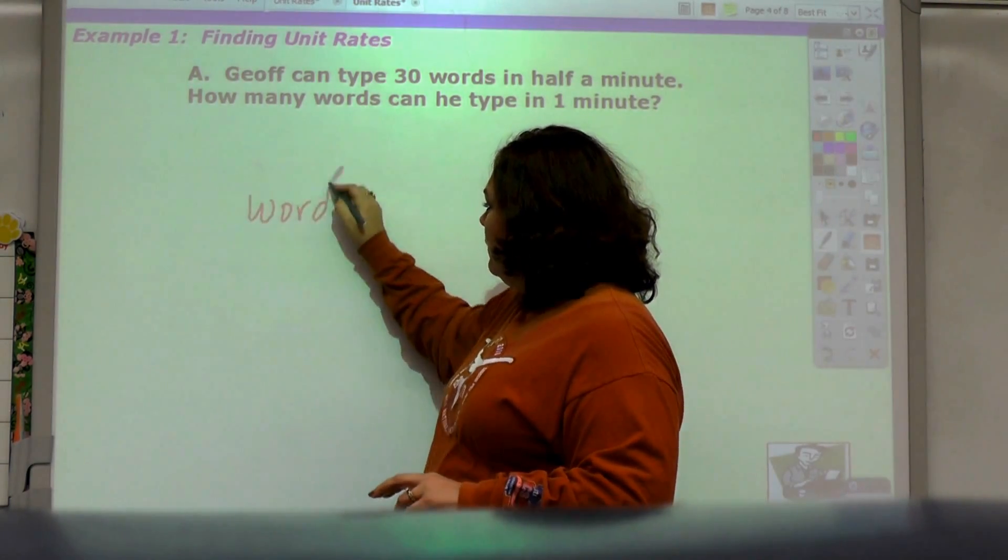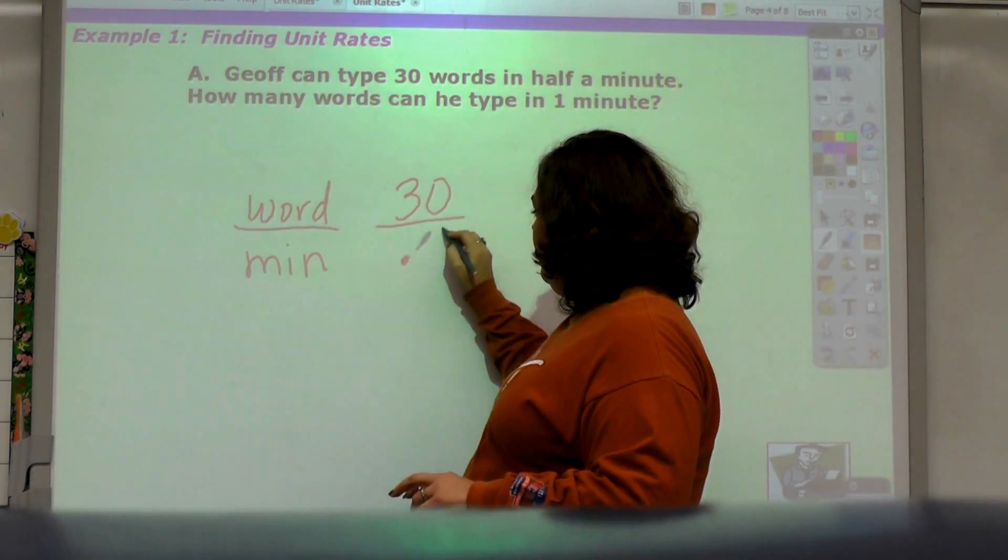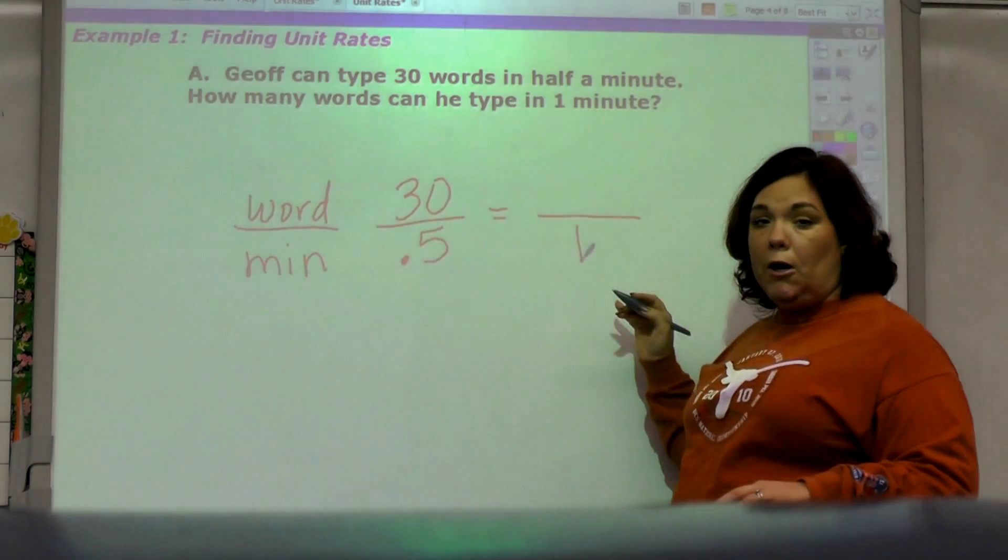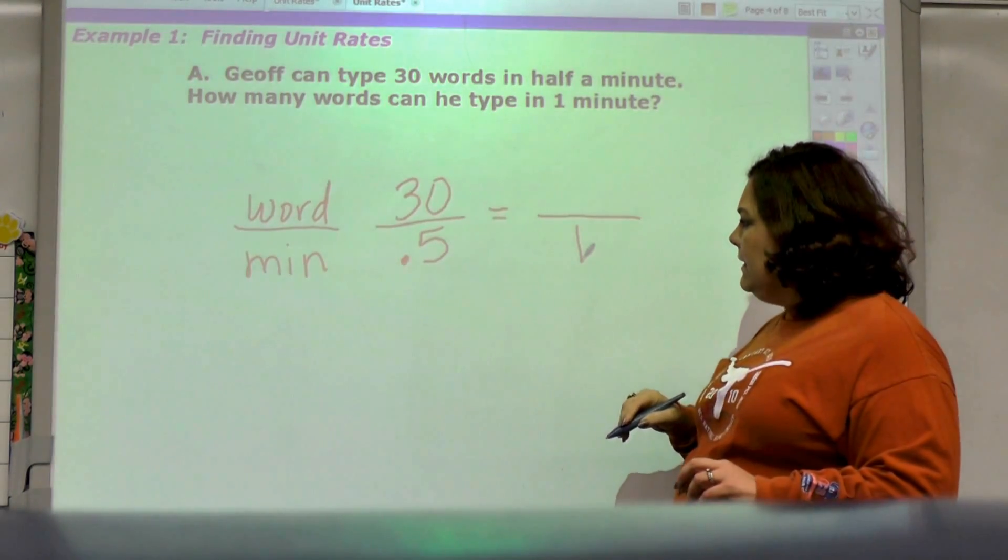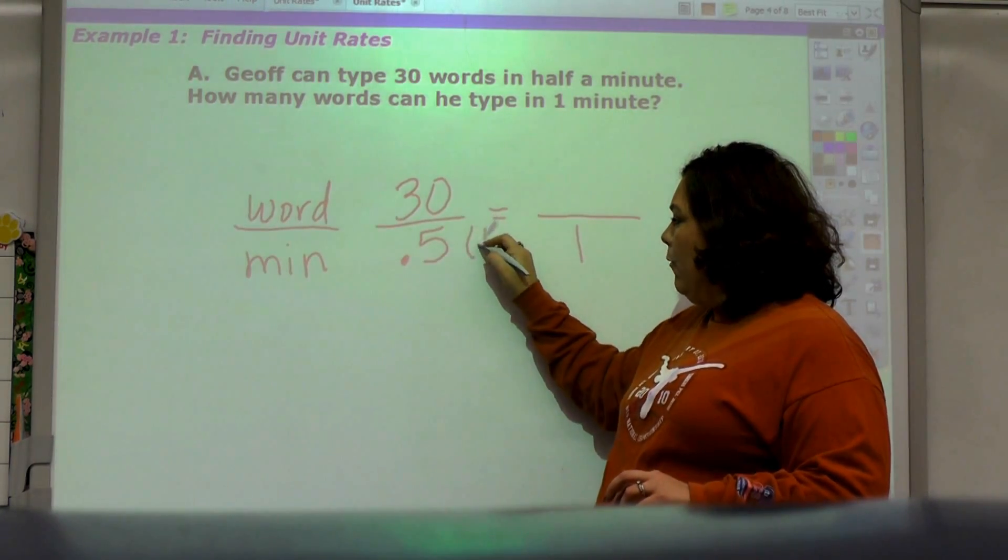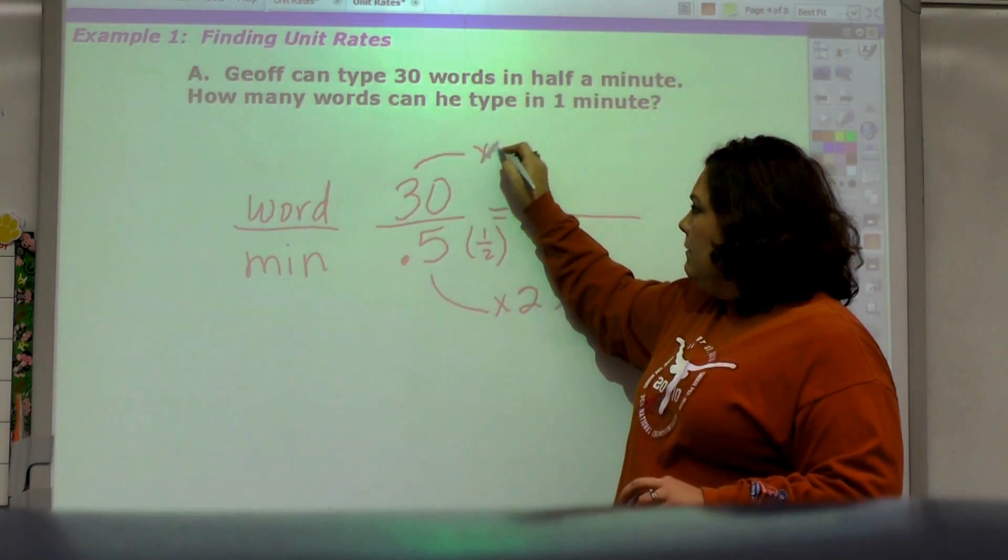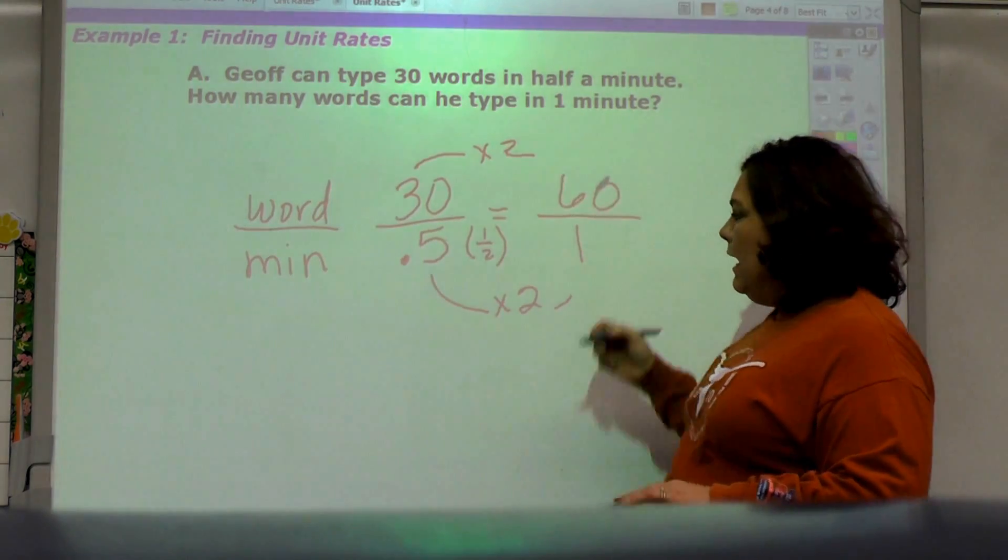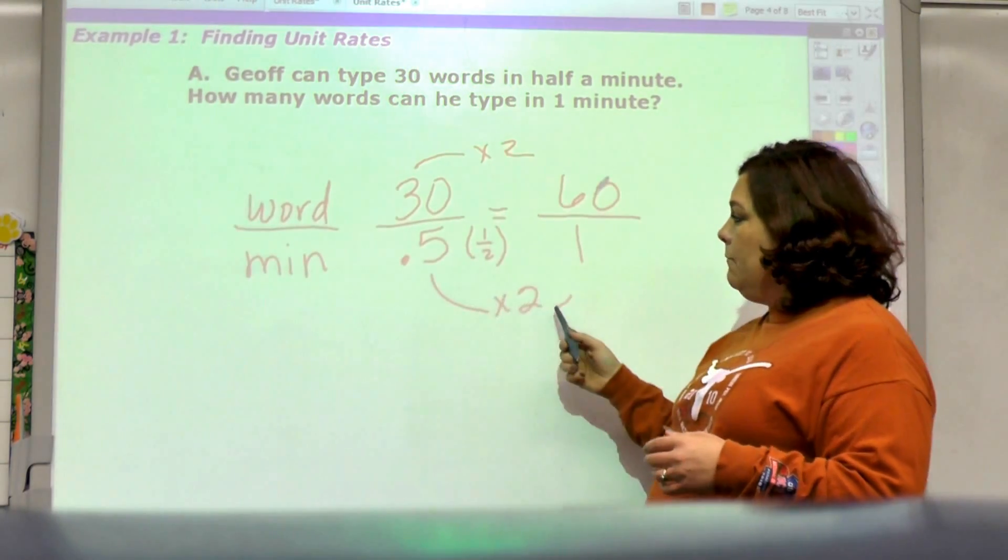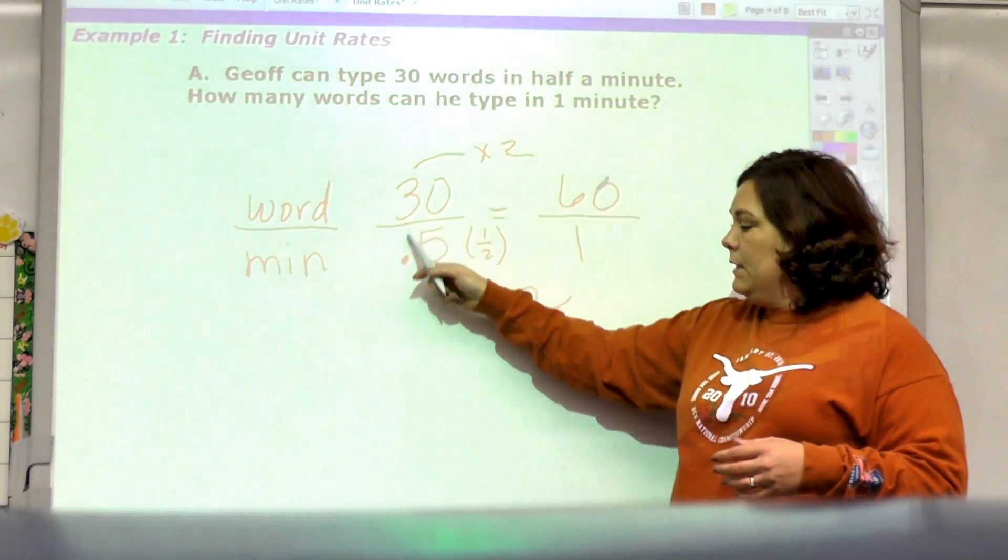Jeff can type 30 words in half a minute, so words and minutes, 30 words in half a minute which is 0.5. How many can he type in one minute? How can you get from half or 0.5 to one? It would be to multiply by 2, and so 30 multiplied by 2 is 60. Doesn't that make sense? In half a minute 30, in full minutes 60.